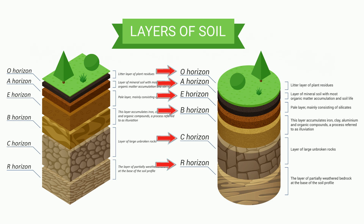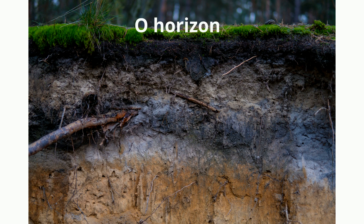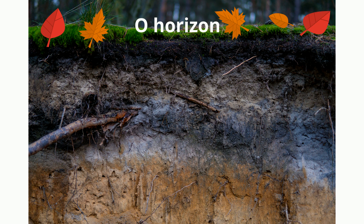The O layer or horizon is also called the litter. It is composed of and contains dead leaves, trees, twigs, sticks, fallen trees. The O horizon is thin in some soils, thick in others, and not present at all in some types.